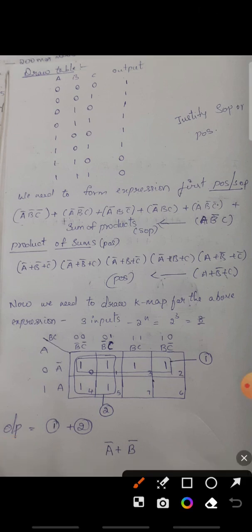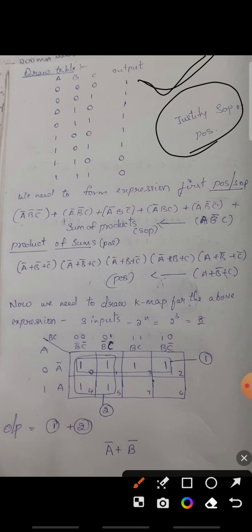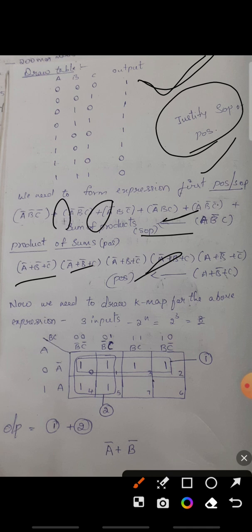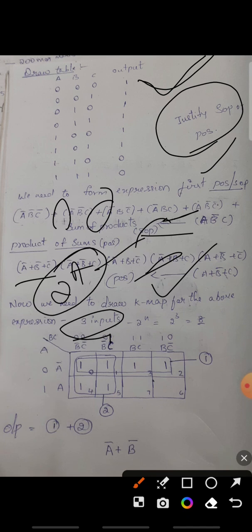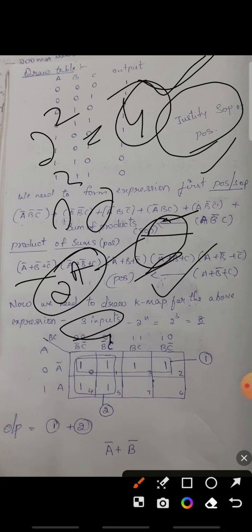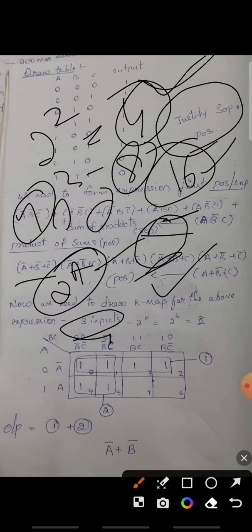In summary, we started with the truth table, wrote SOP and POS expressions, then used a K-map to minimize. For three inputs, we need 2³ = 8 blocks. For two inputs, 4 blocks; for four inputs, 16 blocks. This question has three inputs, so we use 8 blocks.